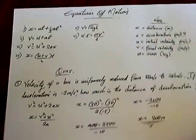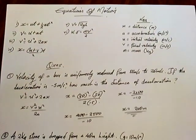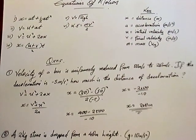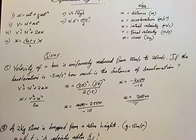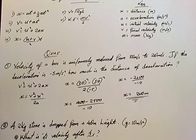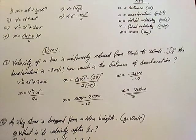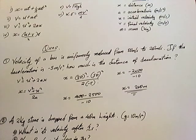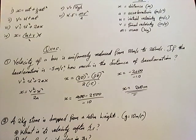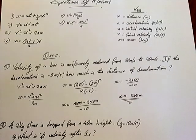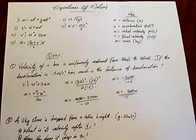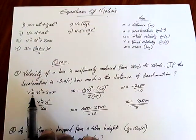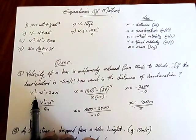I have three questions to cement how these equations can be applied. My first question reads: the velocity of a bus is uniformly reduced from 50 to 20 meters per second — this bus is slowing down. If the deceleration is negative 5 meters per second squared, how far did this bus travel in its deceleration period? I'll pick equation number 3 on my list.